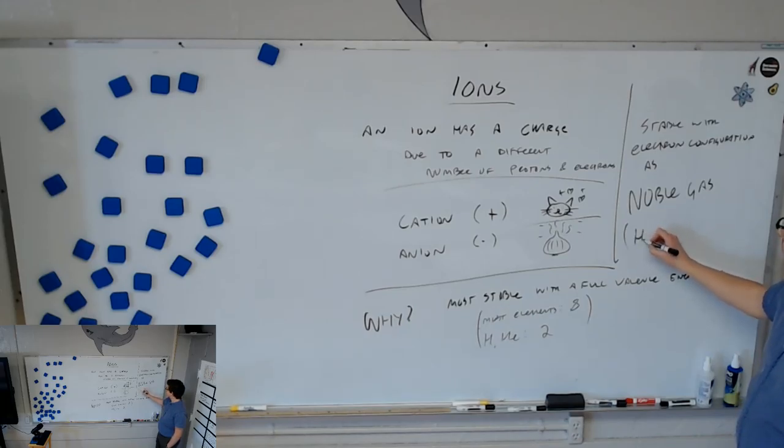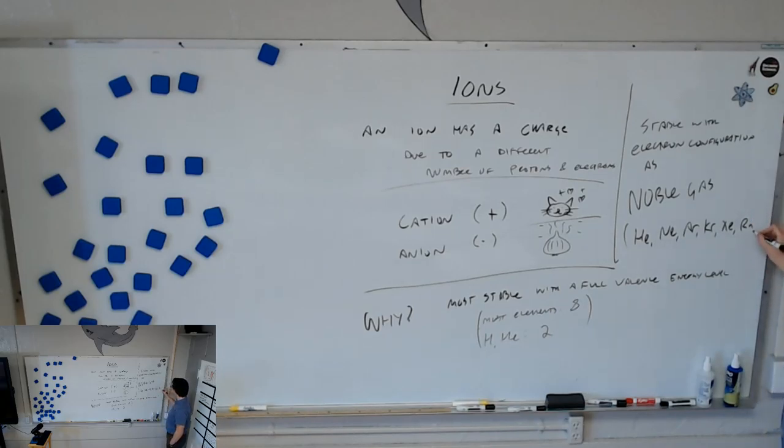Noble gases. List me the noble gases real quick so I can write it down up here. Helium. Helium. Argon. Krypton. Something. Xenon. Radon. Radon. And there's agonesin counts, too, I guess. Wait, what were you talking about noble gases there? Sorry, what? They're stable with the same electron configuration as noble gases.